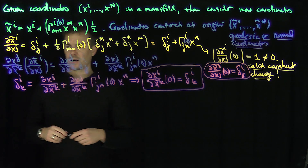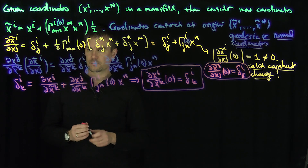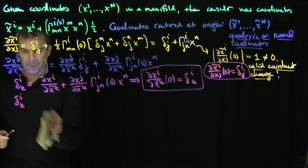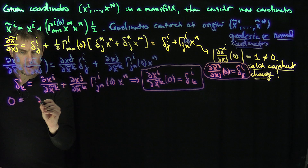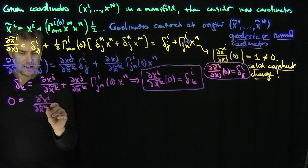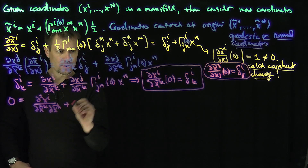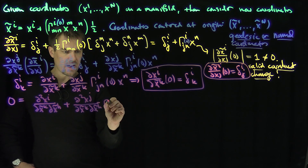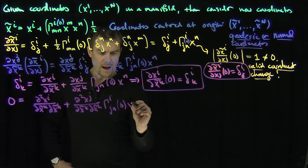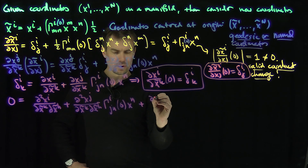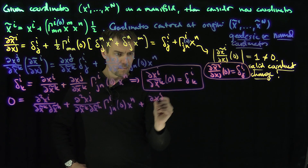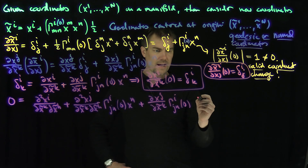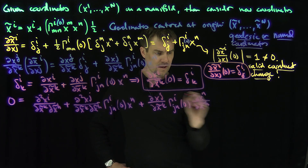Now the last thing I'm going to do is differentiate with respect to a new variable h. So taking partial with respect to x_h of the equation: the delta_ik term vanishes. I get partial squared x_i over partial x_tilde_k partial x_tilde_h, plus partial squared x_j over partial x_tilde_k partial x_tilde_h times gamma_ijn at the origin times x_n, plus partial x_j over partial x_tilde_k times gamma_ijn at zero times partial x_n over partial x_tilde_h.